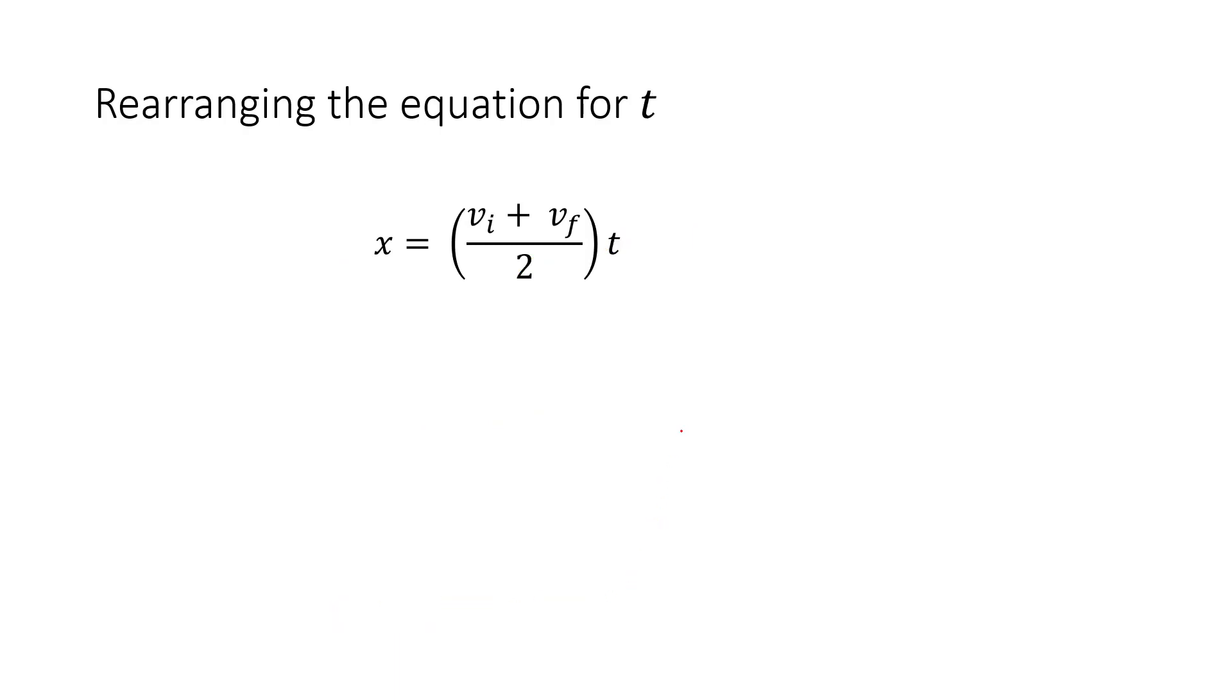Now, if I want to rearrange this for t, this is practically there. At this point, I can divide both sides by the whole thing: vi plus vf over 2. I do that same thing to both sides, and that gets rid of this whole thing.